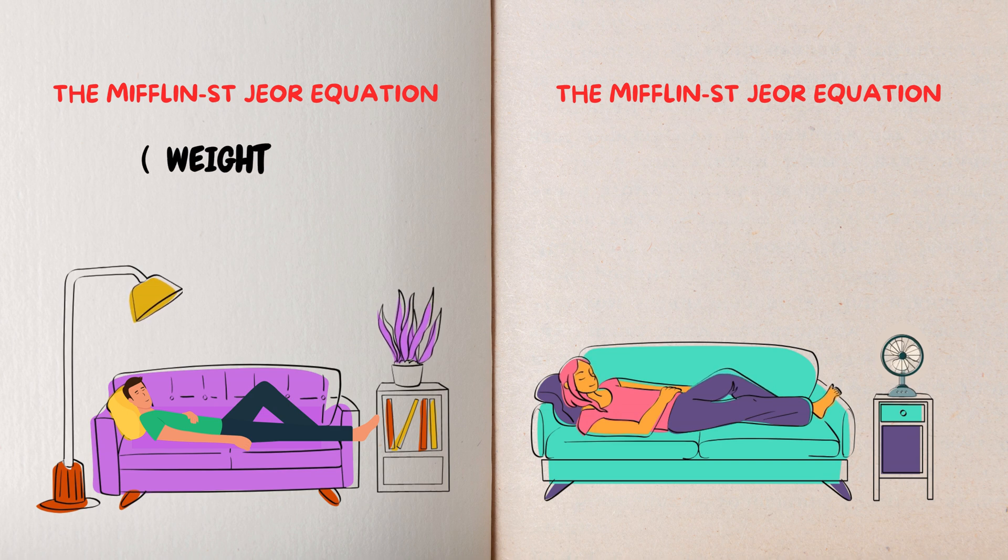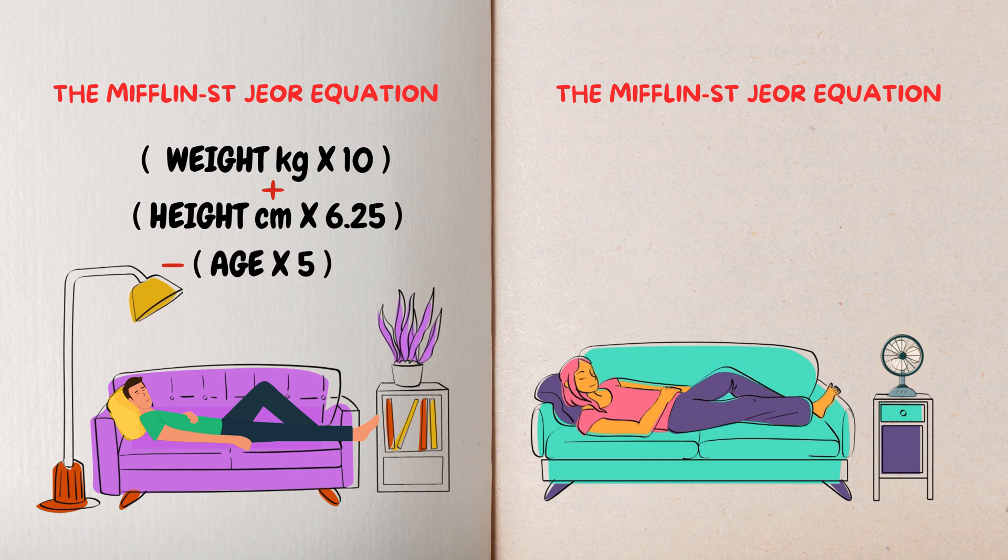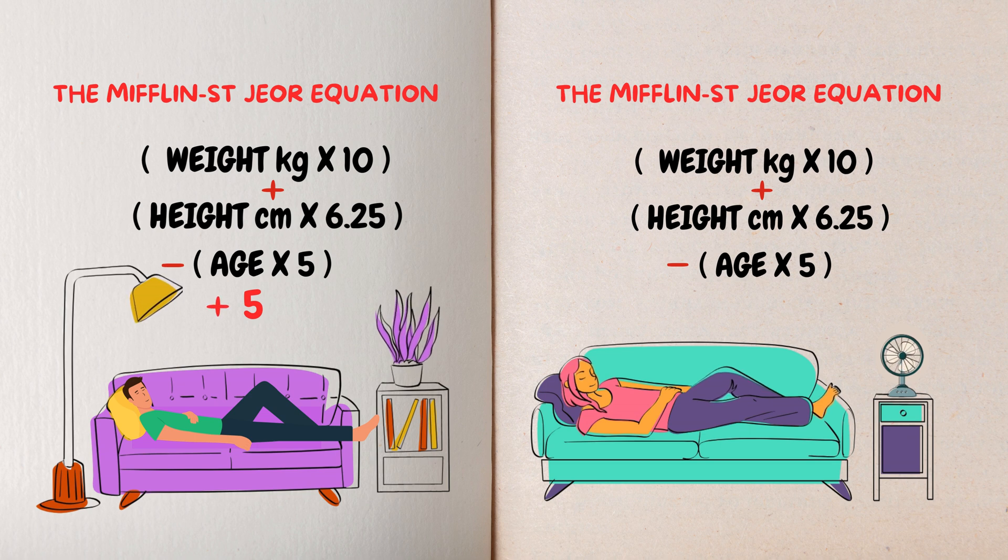First, you multiply your weight in kilograms by 10. Then, you add your height in centimeters multiplied by 6.25. After that, subtract your age multiplied by 5. Finally, if you're a man, add 5 to the total, and if you're a woman, subtract 161. This gives you your BMR, which is the number of calories your body needs to function at rest.